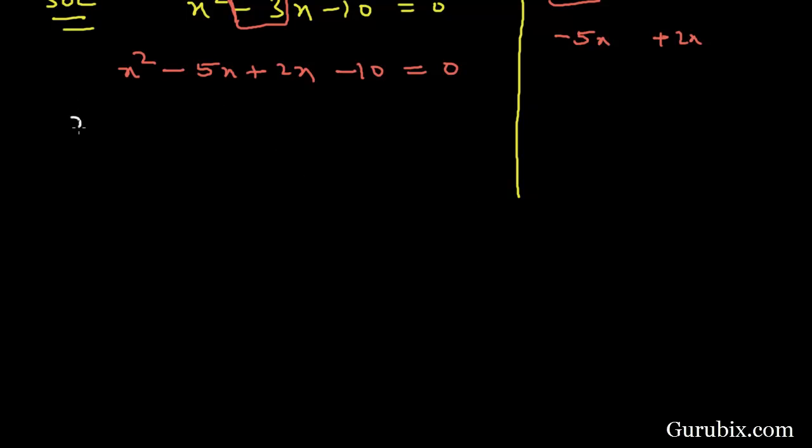Taking x common from the first two terms, we have x(x - 5). Here we have 2(x - 5) equals 0. This gives us x - 5 = 0 or x + 2 = 0.